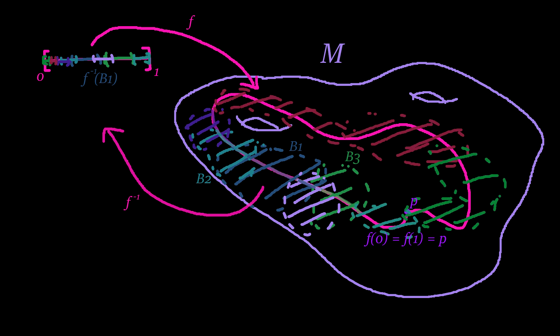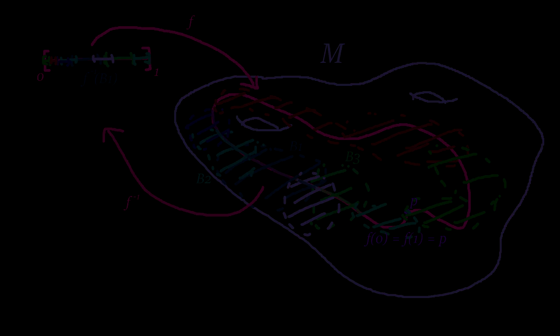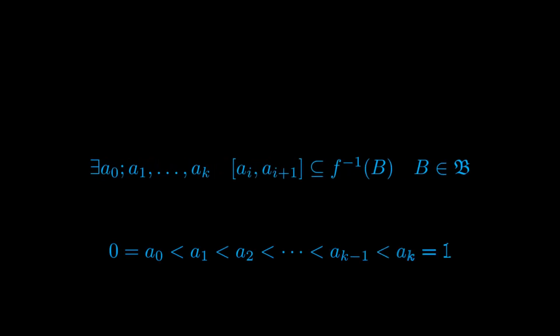This follows from the continuity of F, since pre-images of open sets under a continuous function will be open, and from the property of pre-images. Since [0,1] is compact, our open cover will admit a finite open sub-cover.